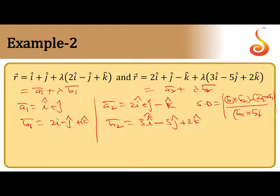Now we are going to calculate ā₂ - ā₁. ā₂ - ā₁: 2î minus î is î, ĵ cancels, minus k̂. This is ā₂ - ā₁.